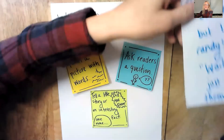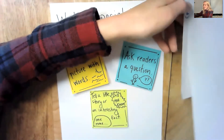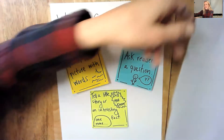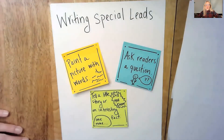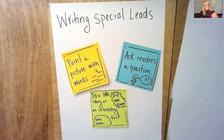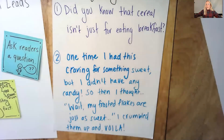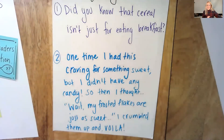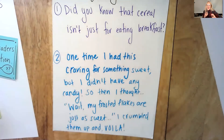I also could maybe give a story — a personal connection that's interesting and maybe relatable. About a time where I was trying to find something delicious and sweet to eat, but I couldn't find any ingredients to make a cake or cupcakes. So what did I do? I used my Frosted Flakes. One time I had this craving for something sweet, but I didn't have any candy. So then I thought, wait — my Frosted Flakes are just as sweet. I crumbled them up, and voilà — dessert.